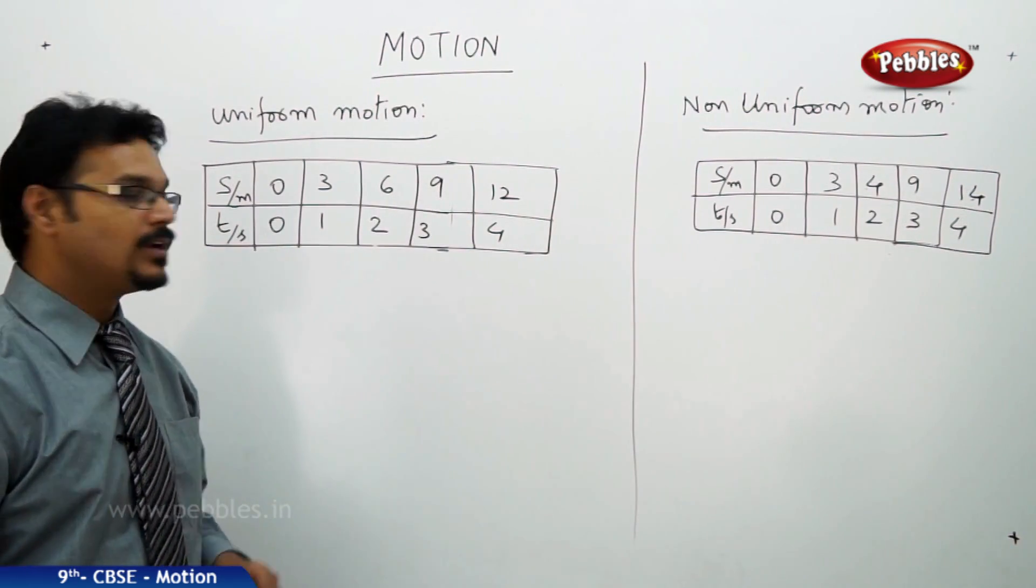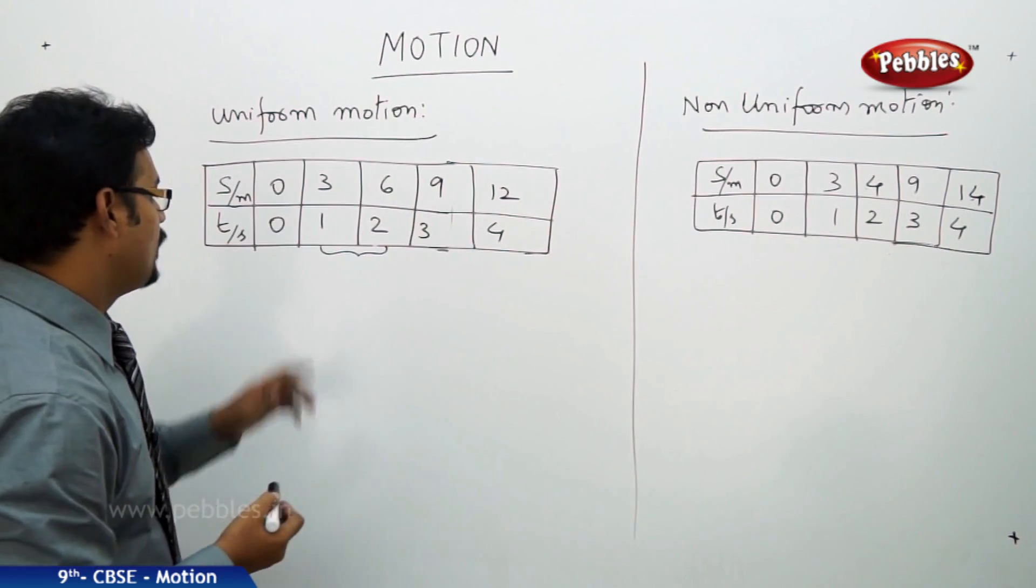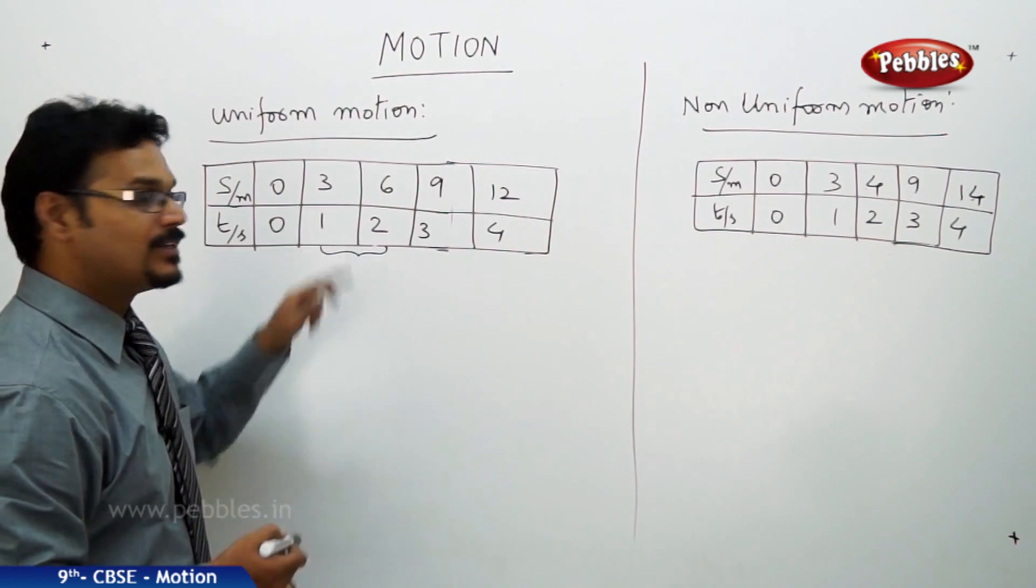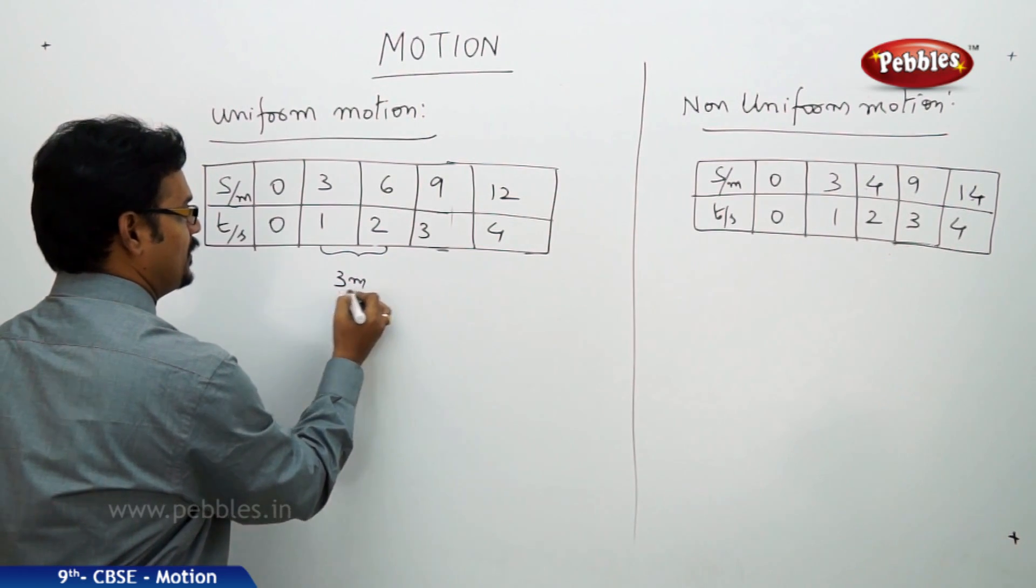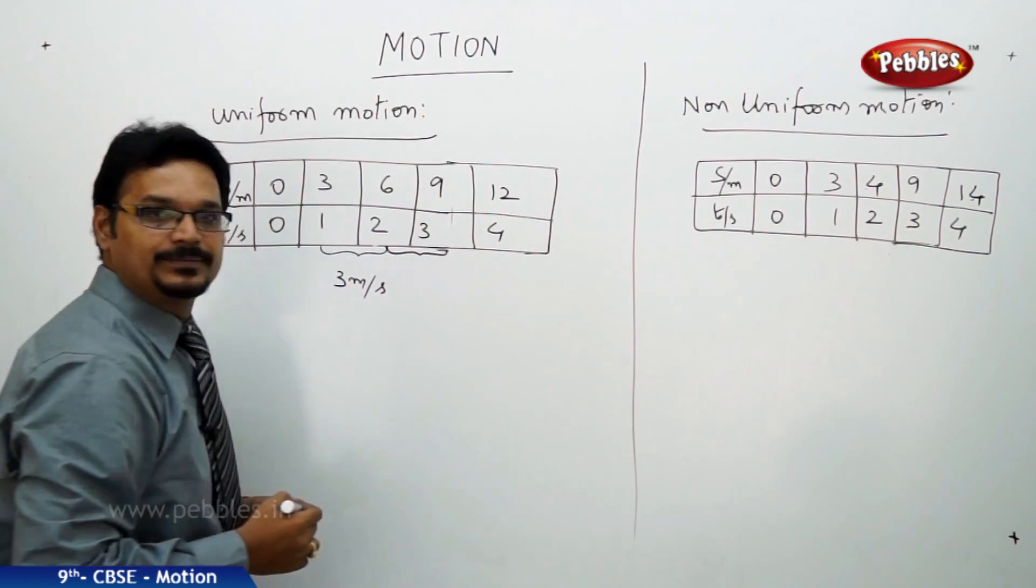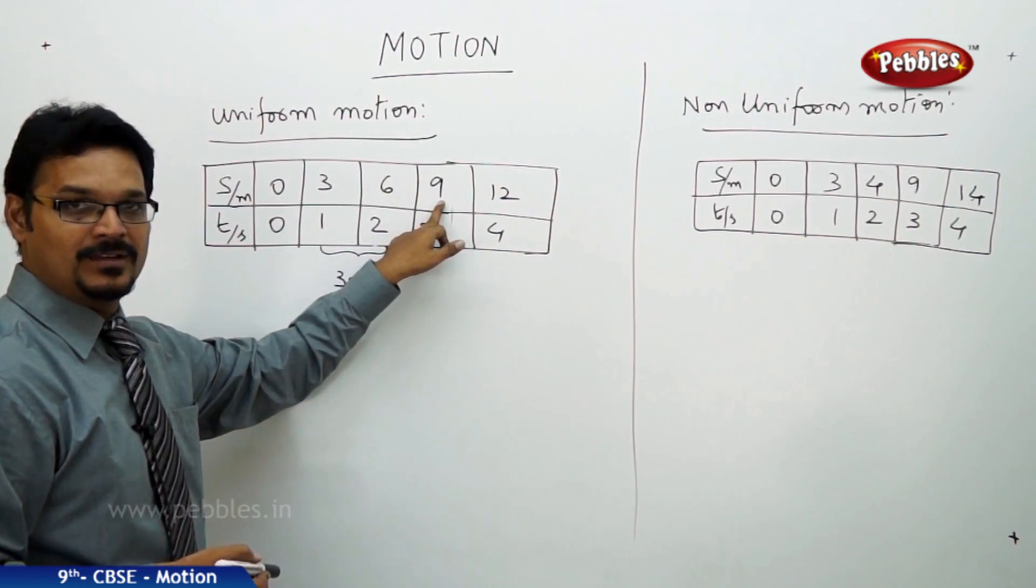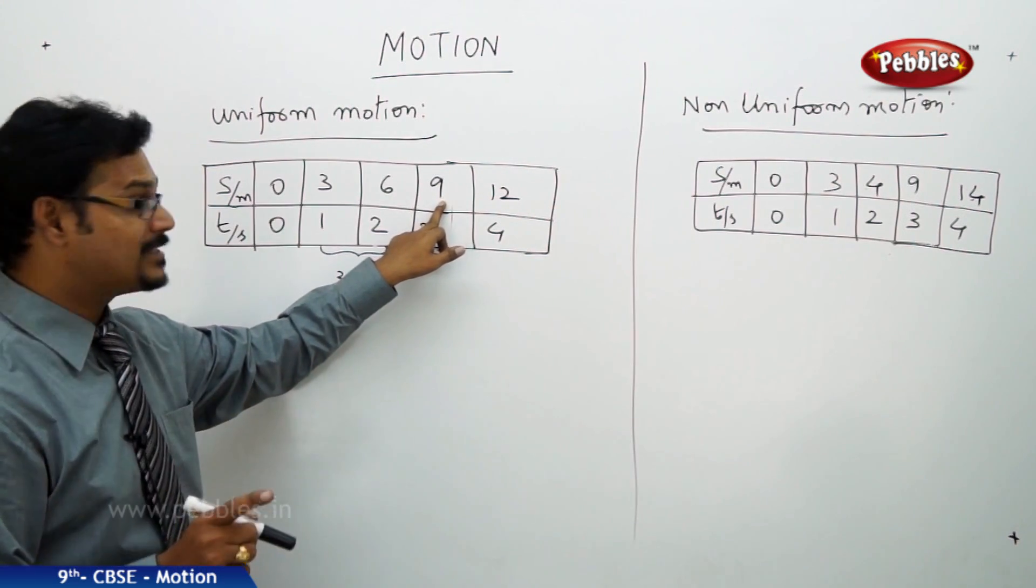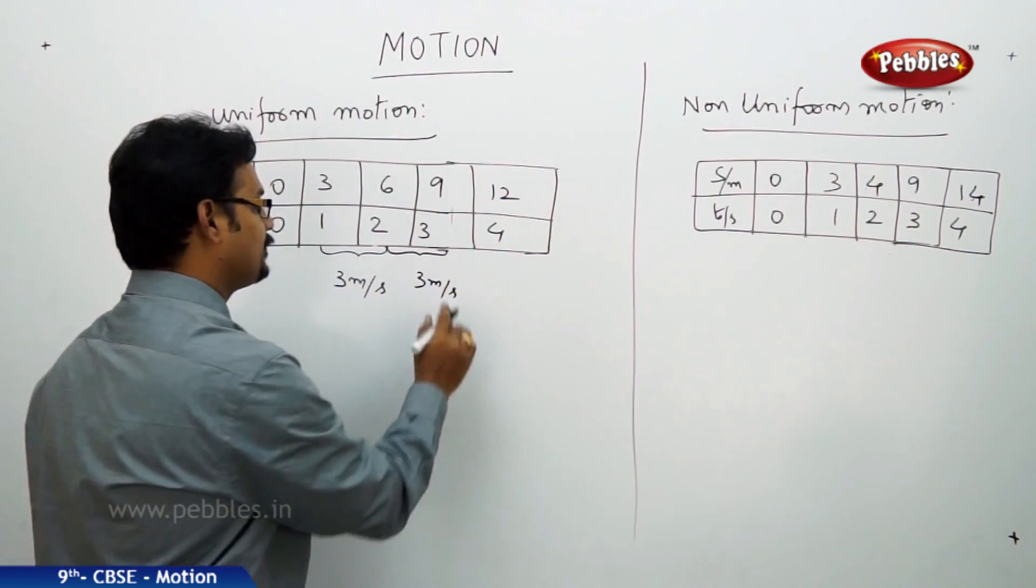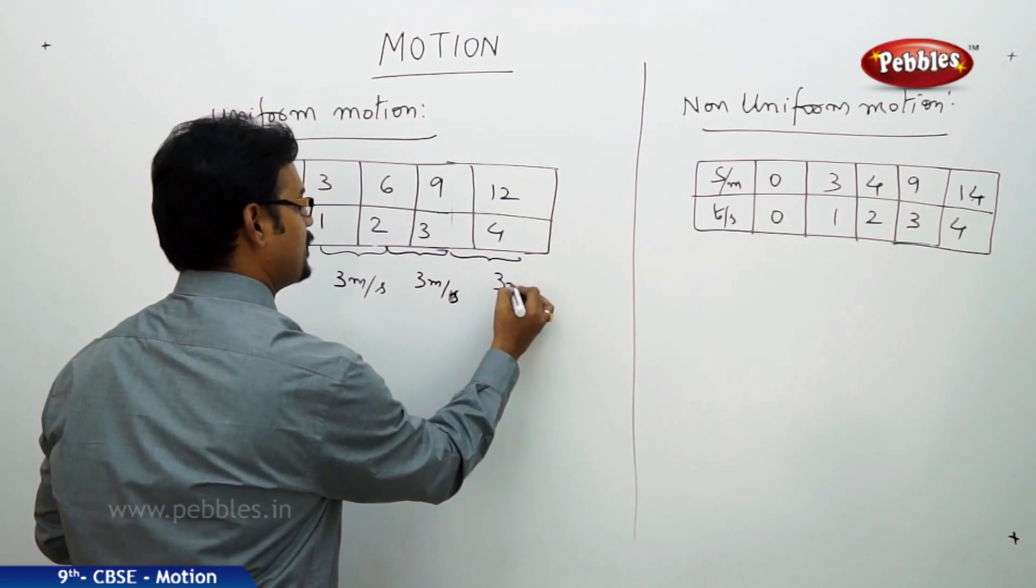Now, if you see, the time interval from 1 to 2. In 1 second to 2 seconds, what is the distance traveled? 6 minus 3. So, this distance traveled is 3 meters per 1 second. Now, coming to 2 to 3 seconds, second second to third second. Then, this is how much distance traveled? It means 6 meters to 9 meters. But distance traveled is not 9 meters. Distance traveled is 9 minus 6, 3 meters again. So, again, it is 3 meters in 1 second. Now, from 3 meters to 4 meters, 3 seconds to 4 seconds, similar, 3 meters per second.